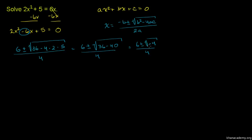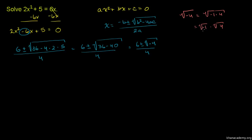The square root of negative 4 is the same thing as 2i. We can see this as the square root of negative 1 times the square root of 4: the principal square root of negative 1 is i, and the principal square root of 4 is 2, so this is 2i. So x is equal to 6 plus or minus 2i, over 4.